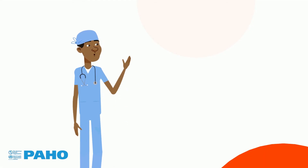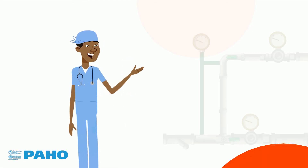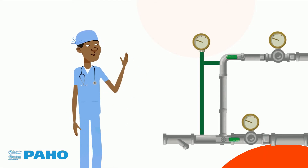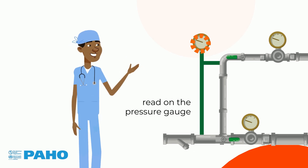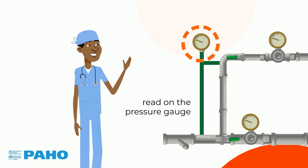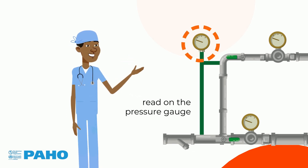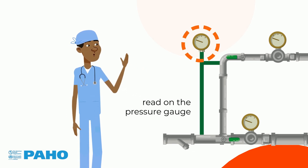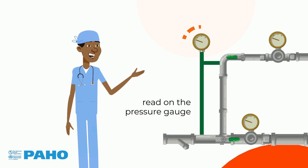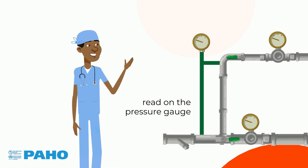The pressure in the evaporator circuit can easily be read on the pressure gauge. If the pressure decreases, it may be necessary to defrost the evaporator.